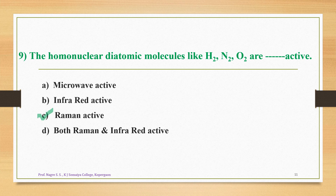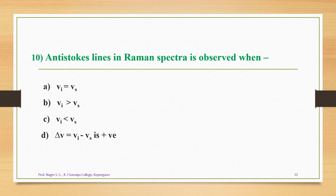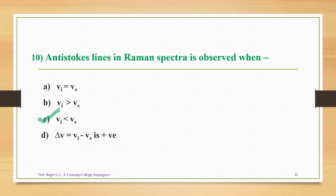Question 10: Anti-Stokes lines in the Raman spectra are observed when — option A: frequency of incident light equals frequency of scattered light, option B: frequency of incident light is greater than scattered light, option C: frequency of incident light is less than that of scattered light, option D: ΔV = (ν_i − ν_s) is positive. The correct answer is option C — the frequency of incident light must be less than that of the scattered light, which gives anti-Stokes lines.